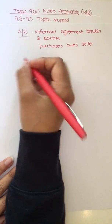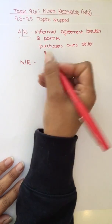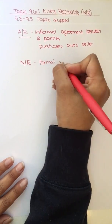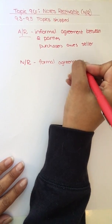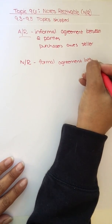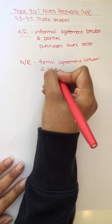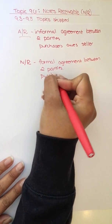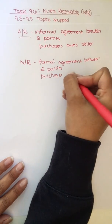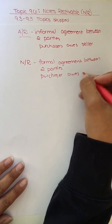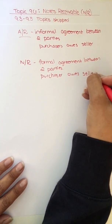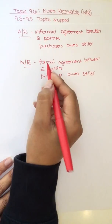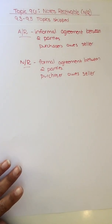Okay, so that was what AR is. So it differs from notes receivable. Notes receivable is a formal agreement between two parties. And so again, the purchaser promises to repay the seller. But again, it's not informal. It's not just, oh, I'll pay you in 30 to 60 days. A note receivable is a formal agreement between the two parties.